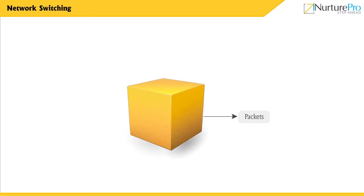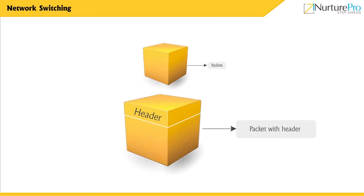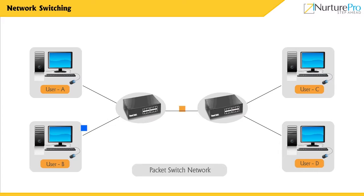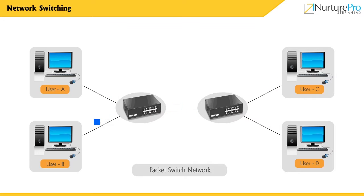Packet switching uses small packets of data messages. These packets are of uniform length and they include a header which has the fields for the source, destination, and intermediate node addresses. Packets are generally accepted by the receiving network in a first-come, first-served manner. The figure shows the routes taken by packet 1 and packet 2, stating that individual packets take different routes to reach their destination.